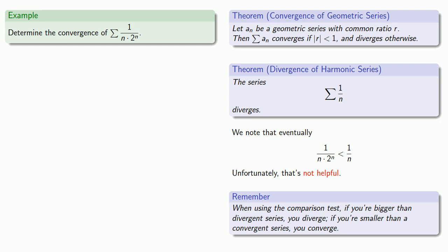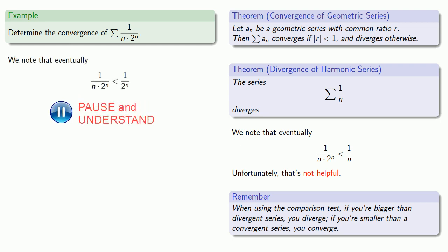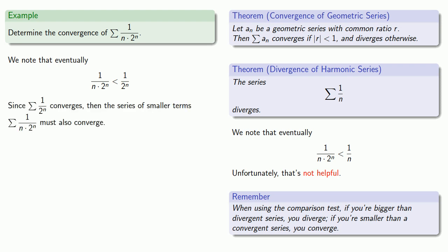So let's compare to the geometric series. Our series terms are less than 1 over 2 to the n. Since the sum of 1 over 2 to the power n is a geometric series with common ratio less than 1, this series converges, and so the series of smaller terms, 1 over n times 2 to the power n, must also converge.